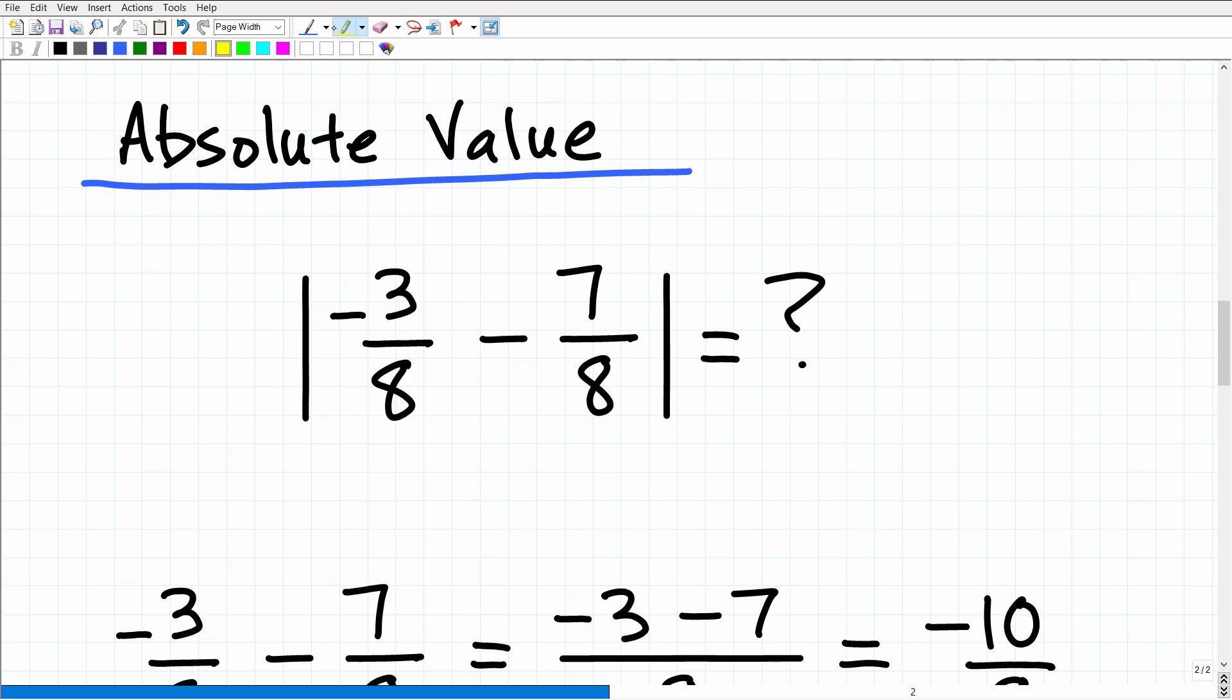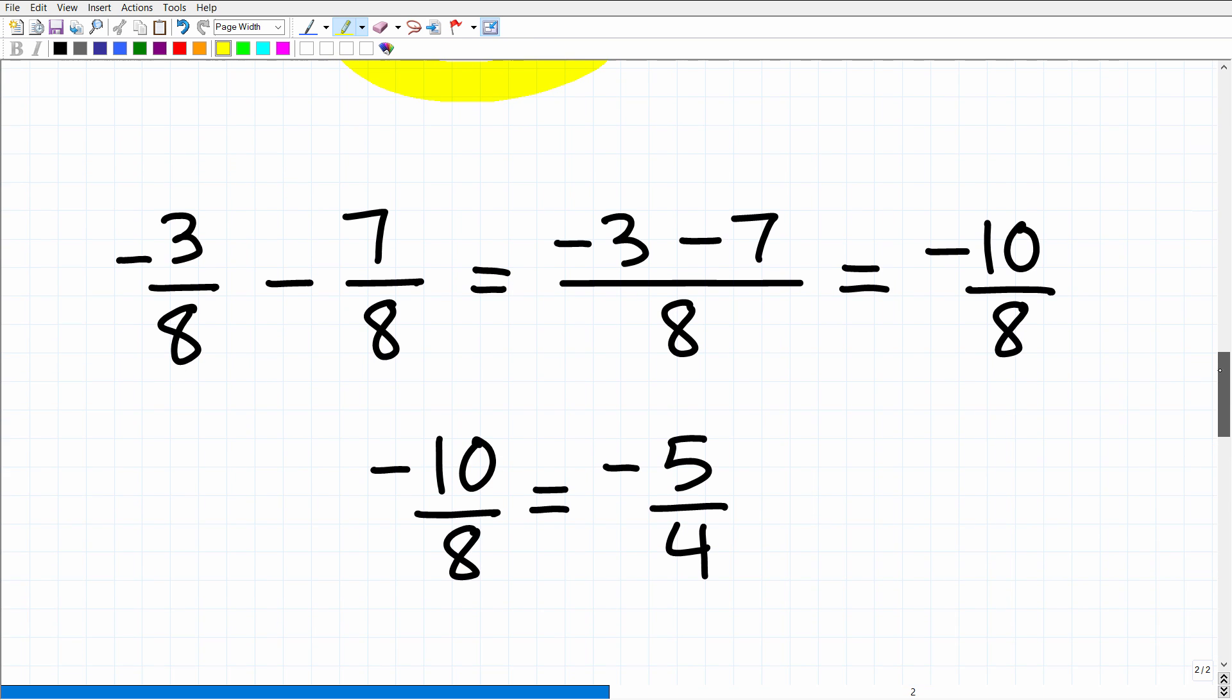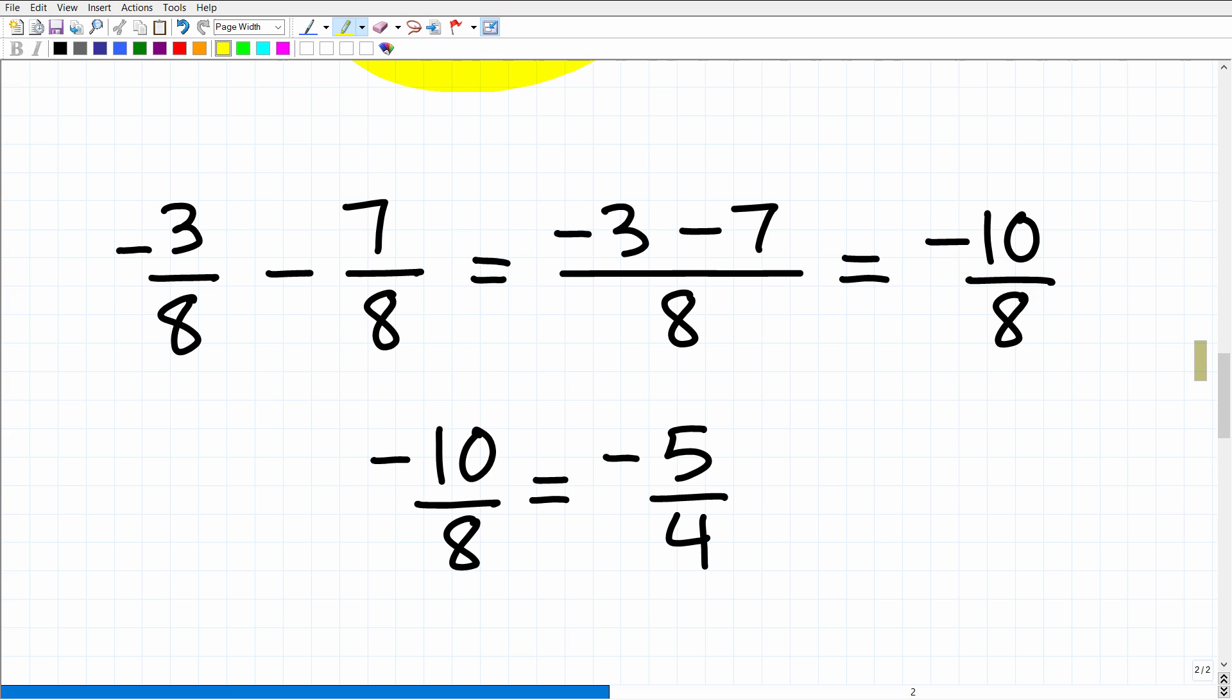The first thing we need to do is we have to simplify this problem inside the absolute value. So we have negative three-eighths minus seven-eighths. We're talking about subtracting these two fractions. This is super easy. Remember, when you want to add and subtract fractions, if the denominators are the same, all we need to do is add or subtract the respective numerators.